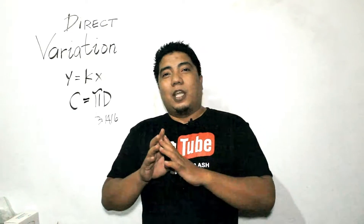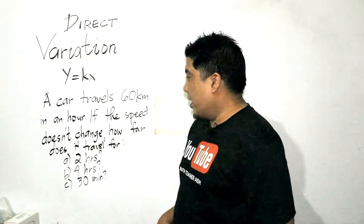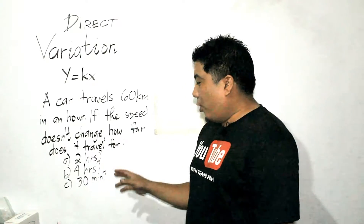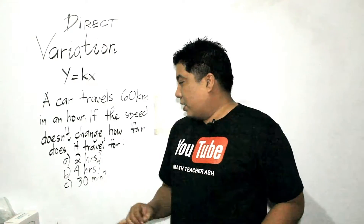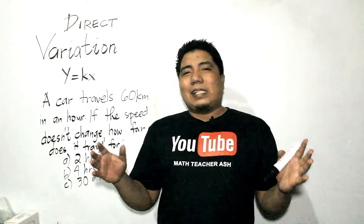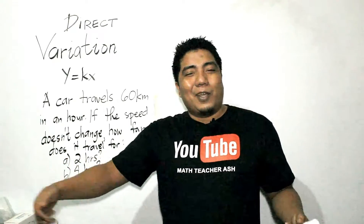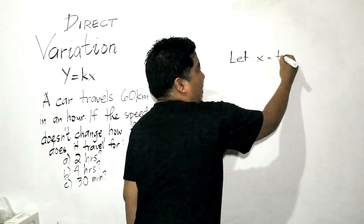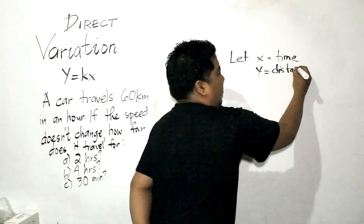Now, let's consider an example applied in the real world. A car travels 60 kilometers in an hour. If the speed doesn't change, how far does it travel for 2 hours, for 4 hours, or for 30 minutes? There are 3 problems we need to solve: the distance for 2 hours, for 4 hours, and for 30 minutes. This is an example of direct variation because as the time increases, the distance also increases. So, let's consider x as the time and y as the distance.